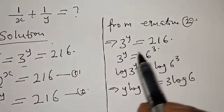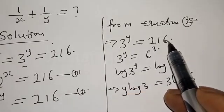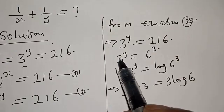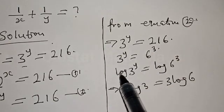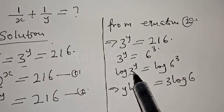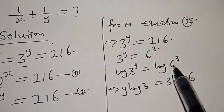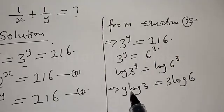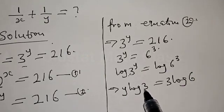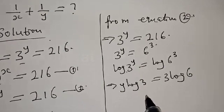From equation 2, we have 3 raised to power y equal to 216, which is 6 raised to power 3. Then log of 3 raised to power y equals log of 6 raised to power 3. This gives us y log 3 equal to 3 log 6.